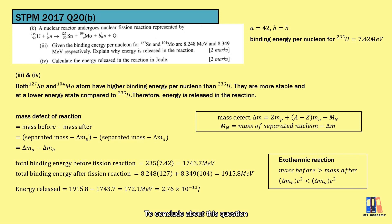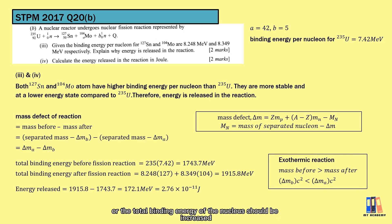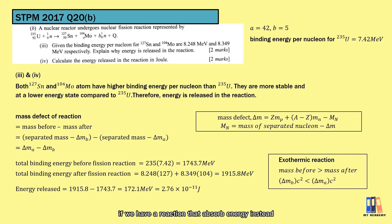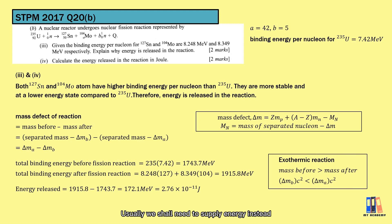To conclude: this is a reaction where energy is released, also known as an exothermic reaction. The total mass of the nucleus decreases, or equivalently, the total binding energy increases after the reaction, and the stability of the products is higher at a lower energy state. Conversely, if a reaction absorbs energy — an endothermic reaction — the comparison of mass or binding energy goes the opposite way, and we need to supply energy to make the reaction occur.